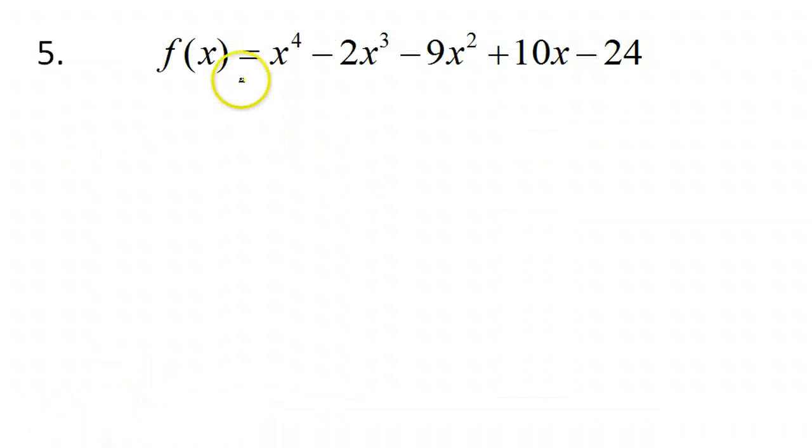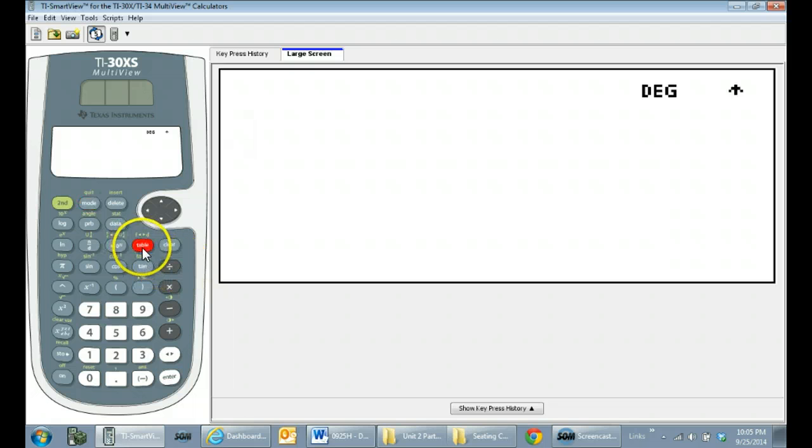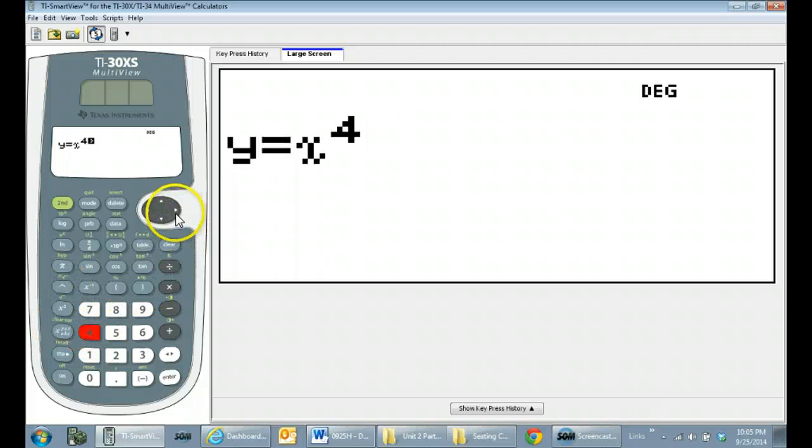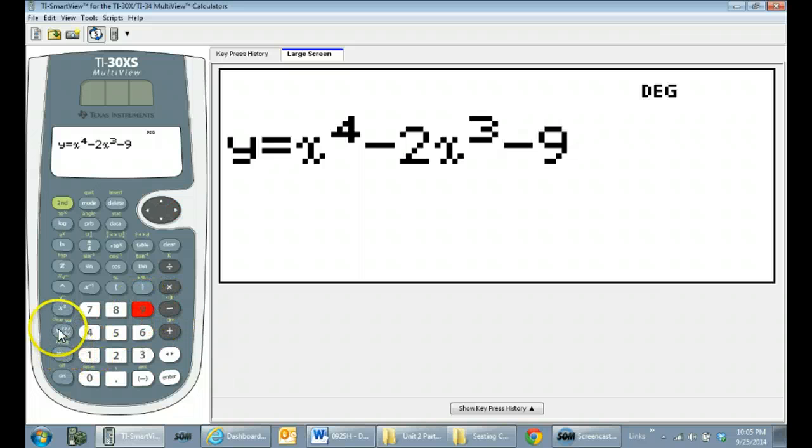Let's start by typing the function into our TI-30XS multiview. Use the table feature, and we have x to the fourth power minus 2x to the third power minus 9x squared plus 10x minus 24.